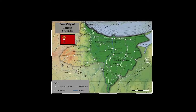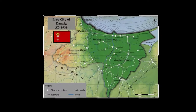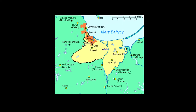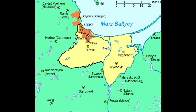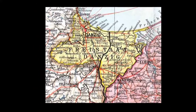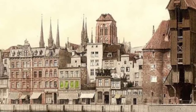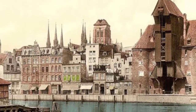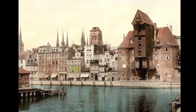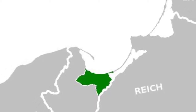The Free City of Danzig was a semi-autonomous city-state that existed between 1920 and 1939, consisting of the Baltic seaport of Danzig — now Gdańsk, Poland — and nearly 200 towns and villages in the surrounding areas. It was created on the 15th of November 1920 in accordance with the terms of Article 100, Section 11, Part 3 of the 1919 Treaty of Versailles after the end of World War One. The Free City included the city of Danzig and other nearby towns, villages, and settlements that were primarily inhabited by Germans.